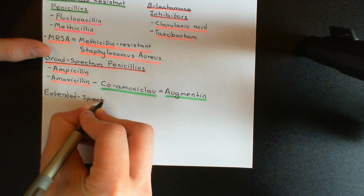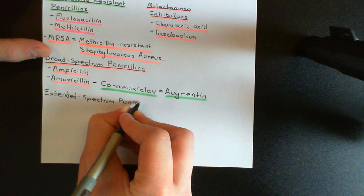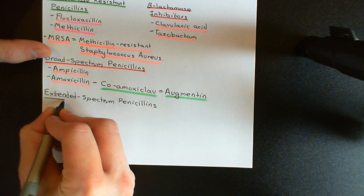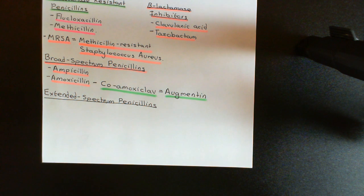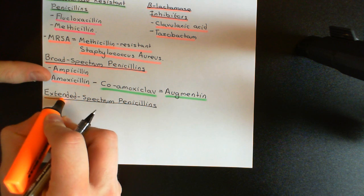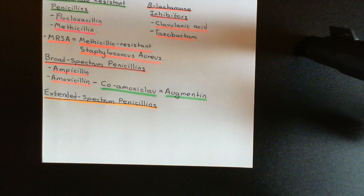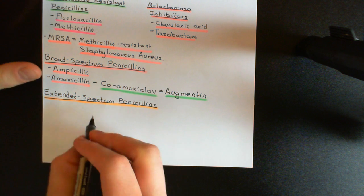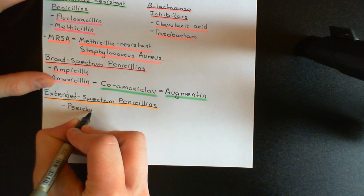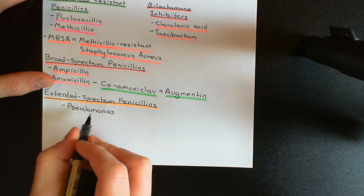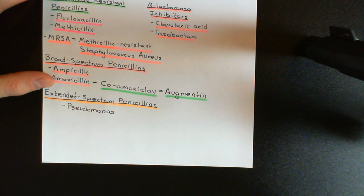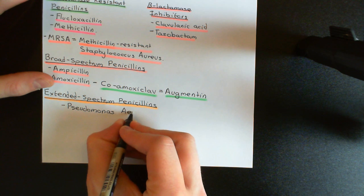In particular, extended spectrum penicillins can kill the bacterial species known as Pseudomonas aeruginosa, which is a very nasty species of bacterium — very difficult to kill with antibiotics, with very few antibiotics having efficacy against it. Even the broad-spectrum penicillins are not good against Pseudomonas aeruginosa. The extended spectrum penicillins have been modified further so that they have efficacy against this species. It's one of the organisms that people with cystic fibrosis commonly get respiratory tract infections with, and once they've got it, it's really difficult to clear — it usually stays with them for the rest of their lives.